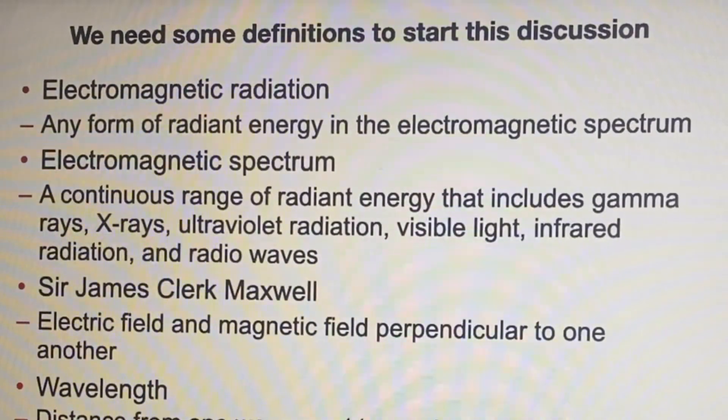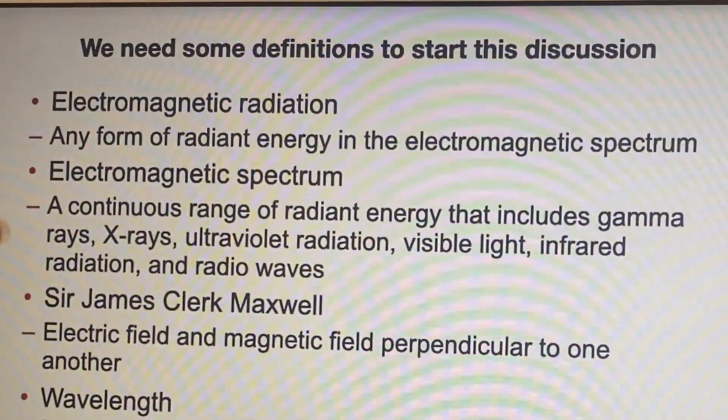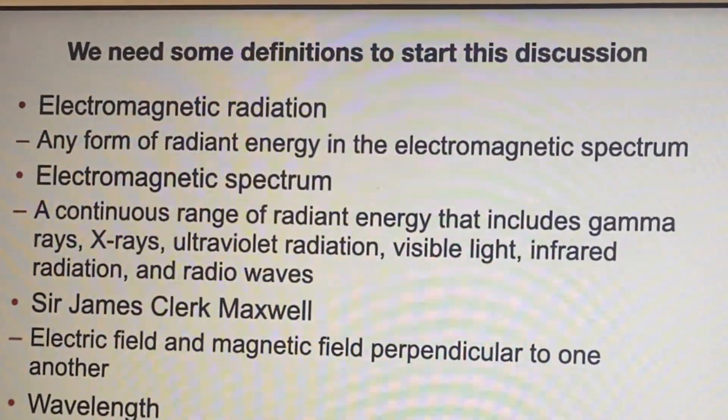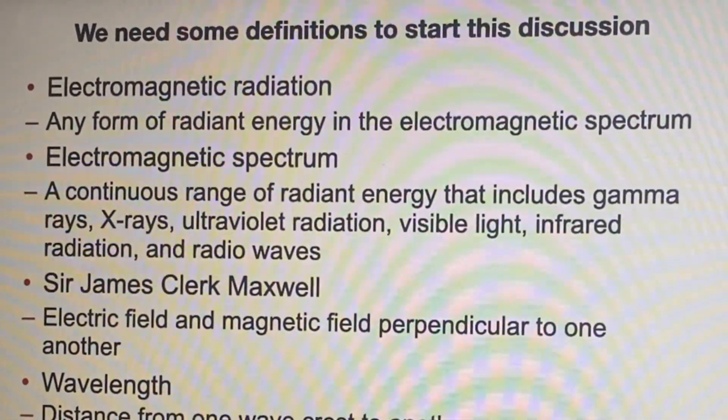What's the electromagnetic spectrum? A continuous range of radiant energy including gamma rays, X-rays, ultraviolet, visible, infrared, radio waves, everything. That's the thing. It's supposed to be the entire spectrum.